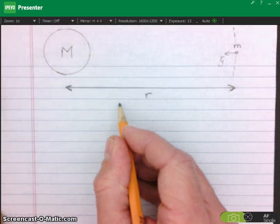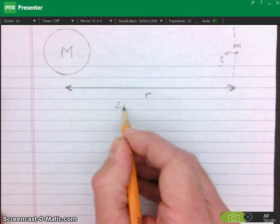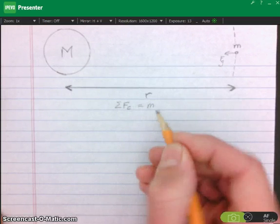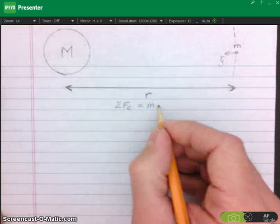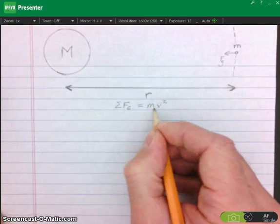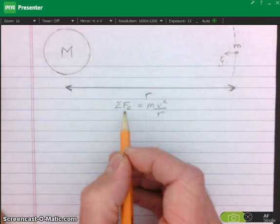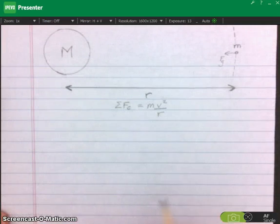You know that the net force when you're traveling in a circle is equal to the mass times the centripetal acceleration which is V squared over R. That net centripetal force is provided by the gravitational force on it.